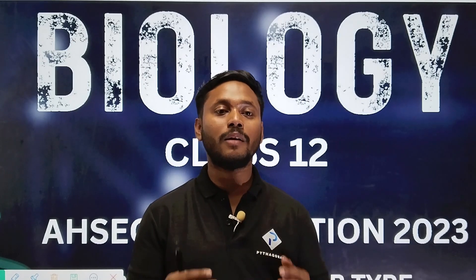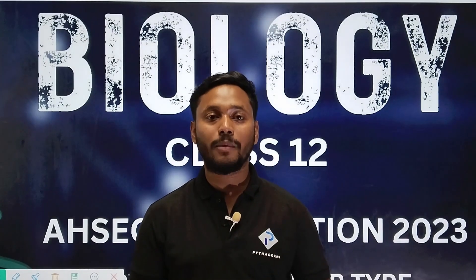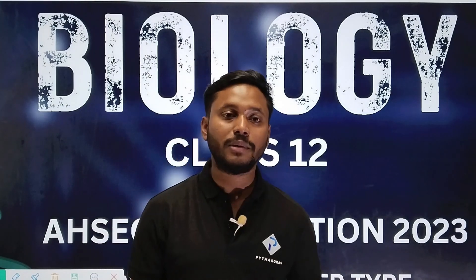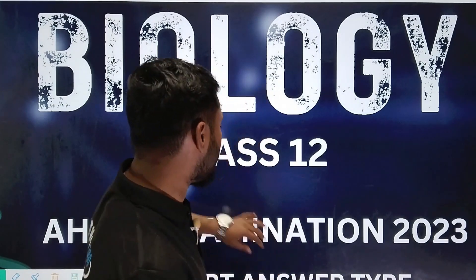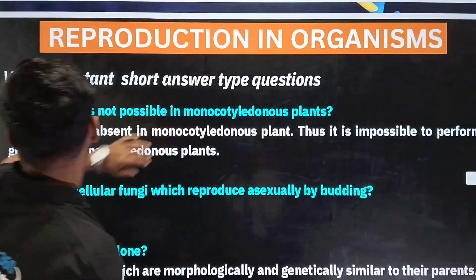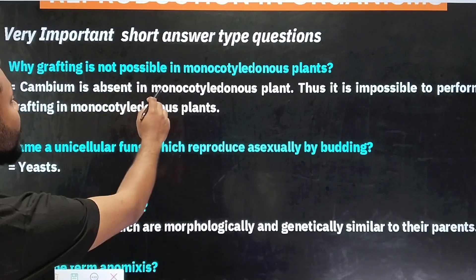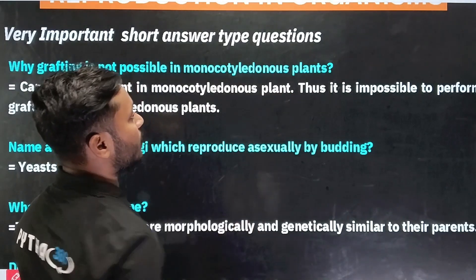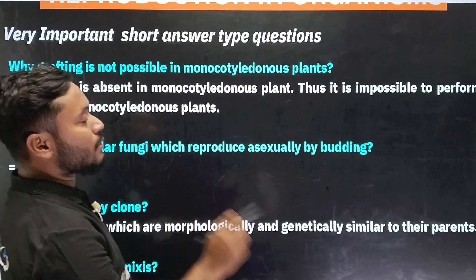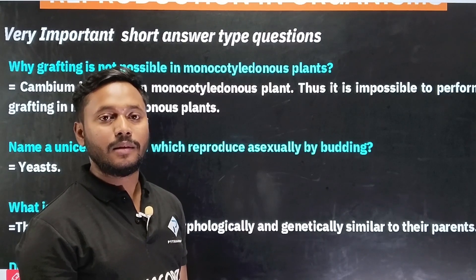I will talk to you about what important questions and short questions you have to cover. The first question is a short type question: Why is grafting not possible in monocotyledonous plants? We have answered that cambium is absent in monocotyledonous plants. Thus, it is impossible to perform grafting in monocotyledonous plants.